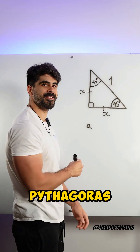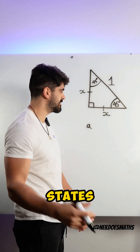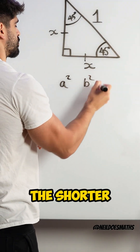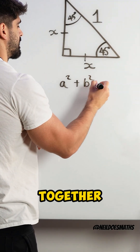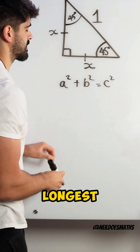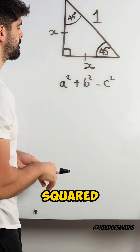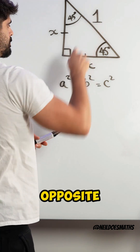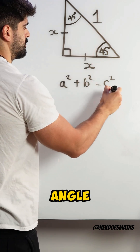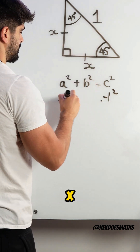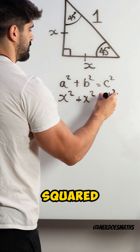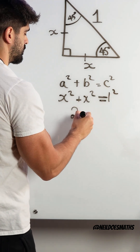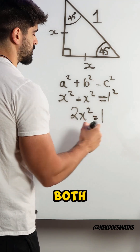Pythagoras' Theorem states that if you square the shorter sides and add them together, it is equal to the longest side squared. So, my longest side is 1, opposite the right angle. And then my shorter sides: x squared plus x squared equals 1 squared. Two of the same thing: 2x squared equals 1.